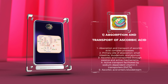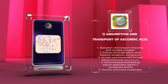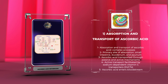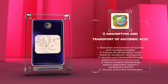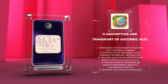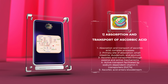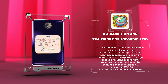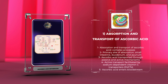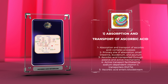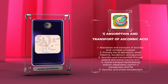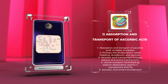The primary site of absorption is the small intestine, primarily in the duodenum and jejunum. Once ingested, ascorbic acid is transported across the intestinal epithelial cells through both passive and active transport mechanisms. The active transport of ascorbic acid is facilitated by sodium-dependent vitamin C transporters (SVCTs), specifically SVCT1 and SVCT2, which are responsible for the uptake of ascorbic acid into the cells.